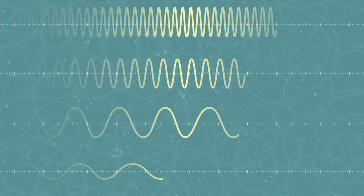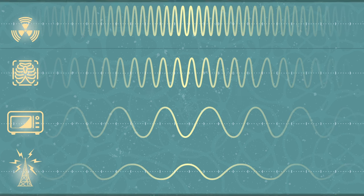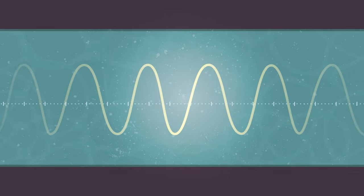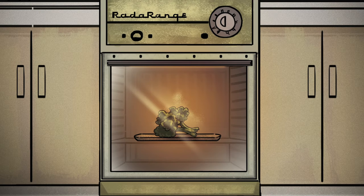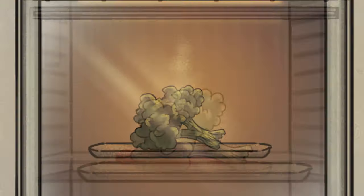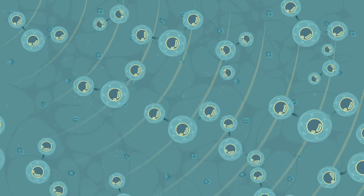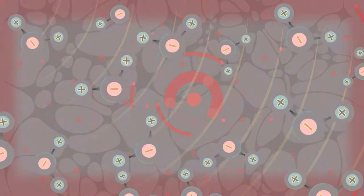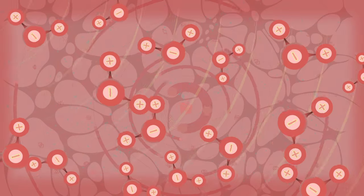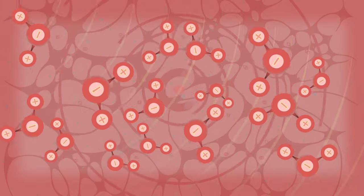The frequency the light is traveling at also determines how it interacts with matter. Microwaves interact strongly with the water molecules found in most foods. Essentially, they make the molecules jostle against each other, creating frictional heat.